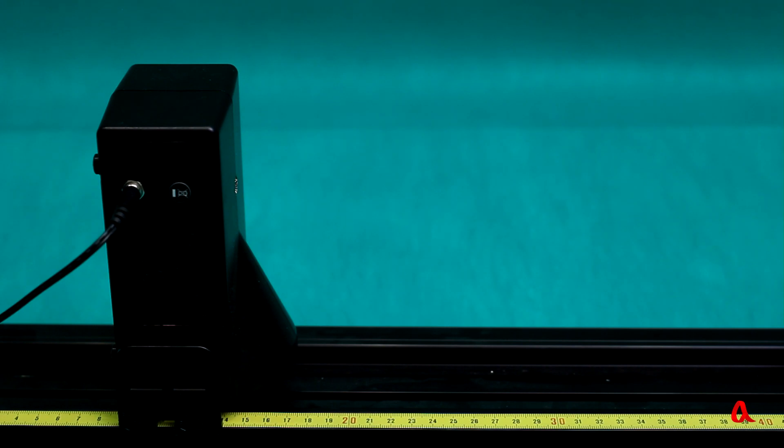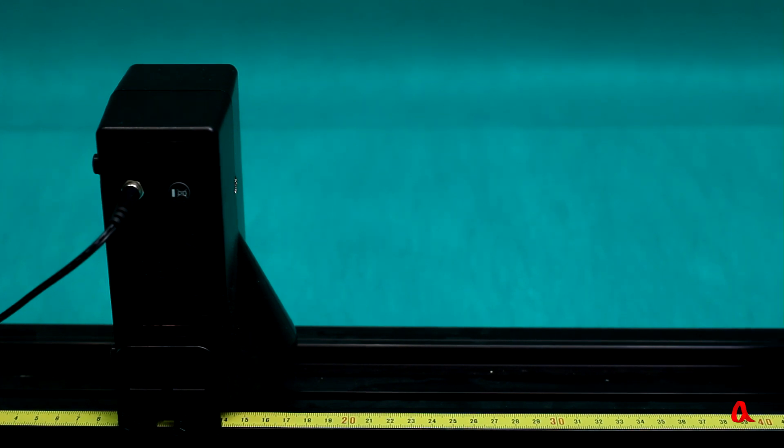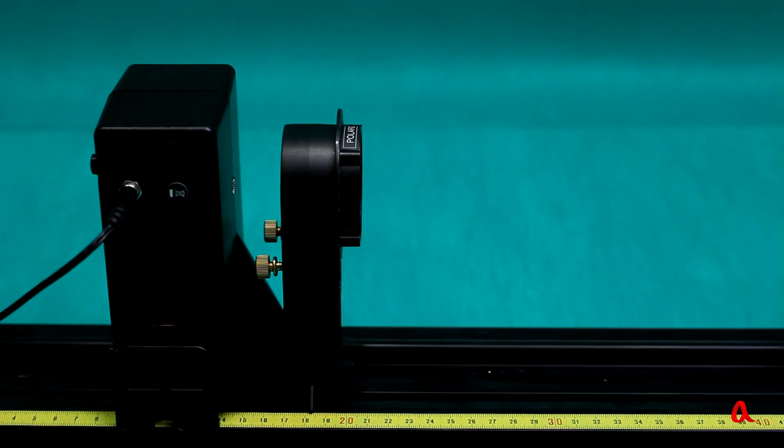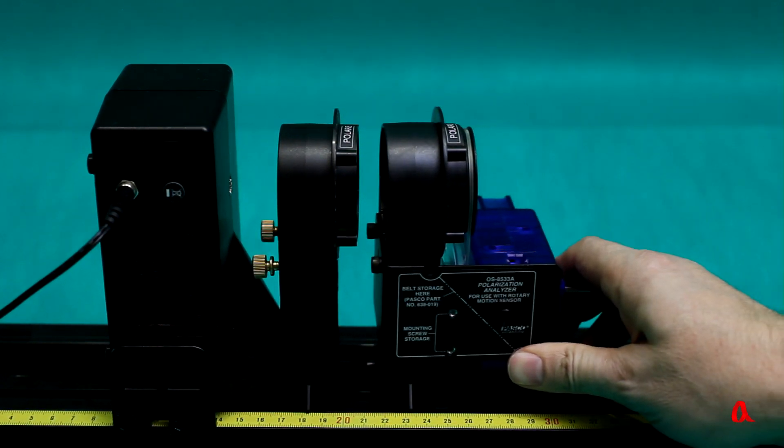Let's see how this law is fulfilled experimentally. A light source is installed onto an optical bench. Let's put a polarizer next to it. Next comes an analyzer connected to a rotary motion sensor.